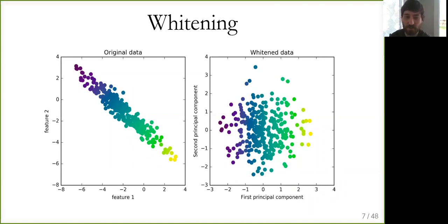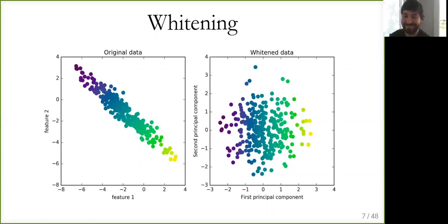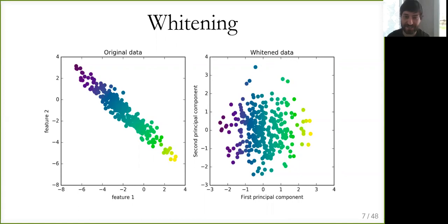Why is it called whitening? It's from signal processing — basically it makes the data look like white noise.